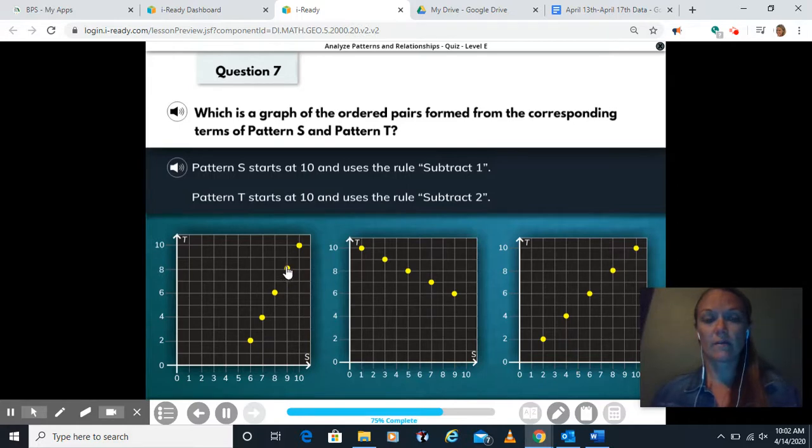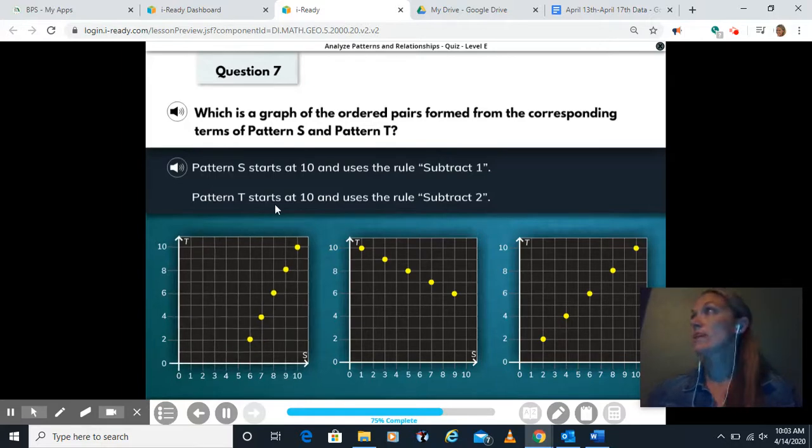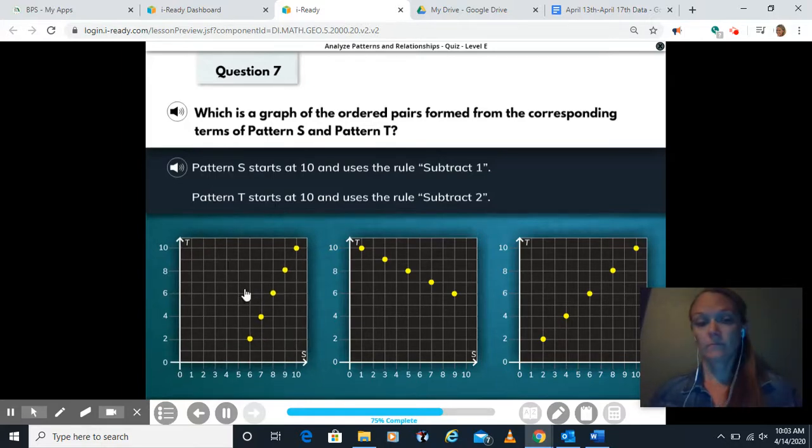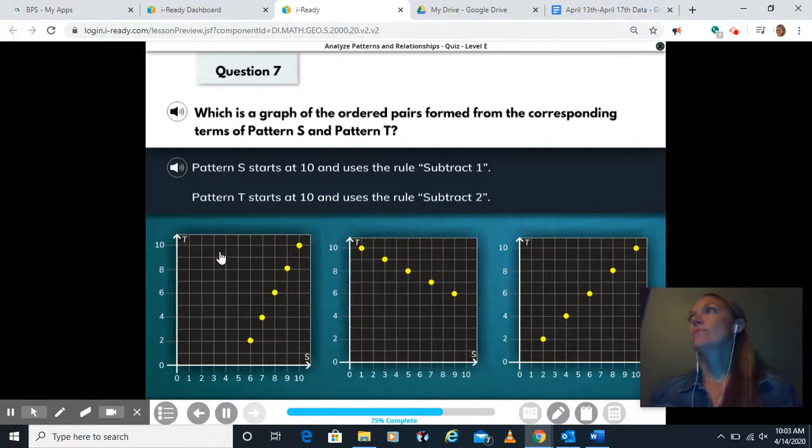Subtract one. So we're at nine. I subtract one, I should be at eight. And then I subtract two, so I would go down two to six. That worked again. Just one second. Sorry, that was my son coming in for something. So that works.